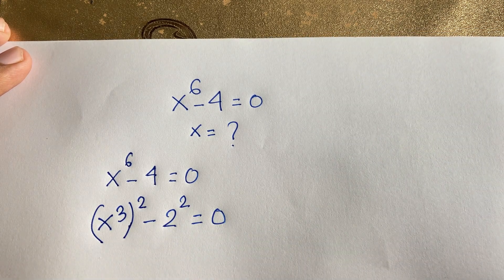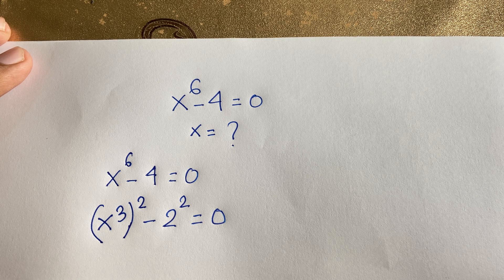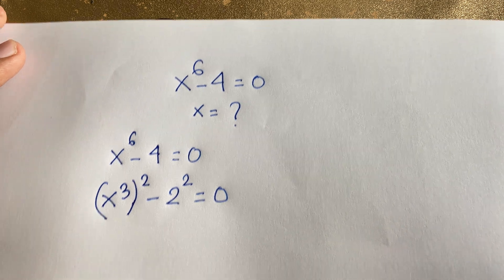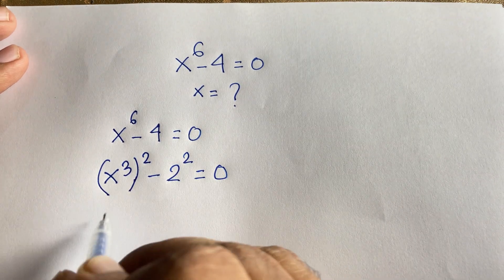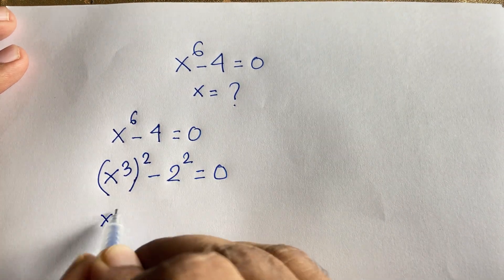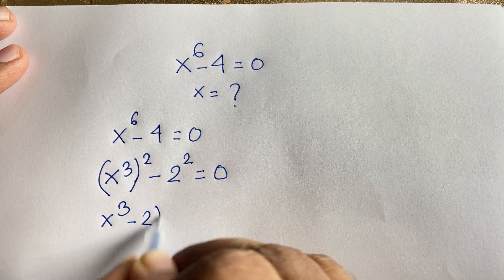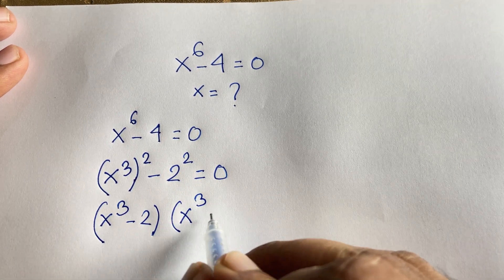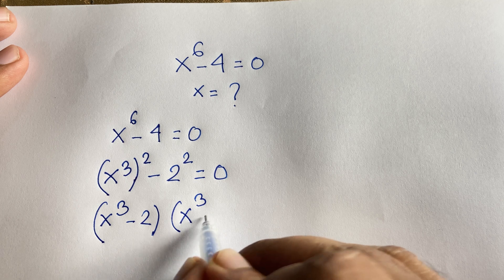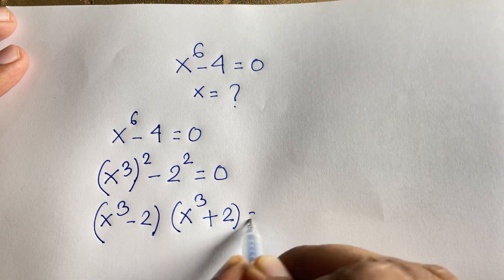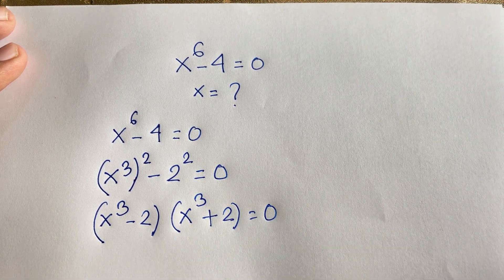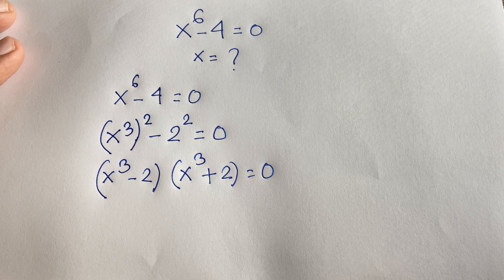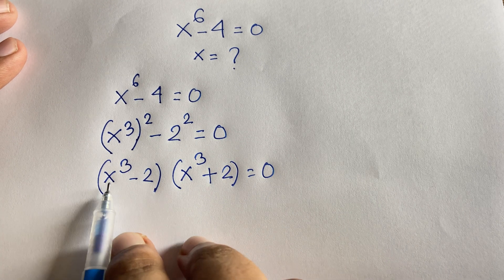We know the identity a² minus b² equals (a + b)(a − b). Applying this, it becomes (x³ − 2) times (x³ + 2) equals 0.